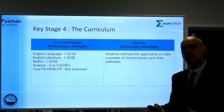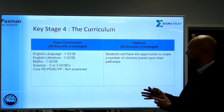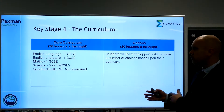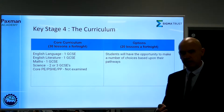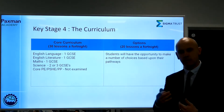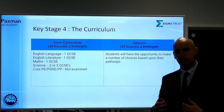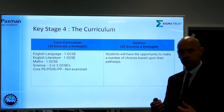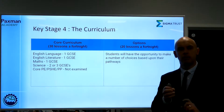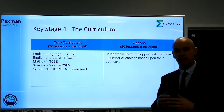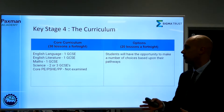So what is the Key Stage 4 curriculum? Essentially, we've got two parts. The first part is the core curriculum, which is made up of approximately 30 lessons a fortnight. The reason I say approximately is because we have some different pathways for students. We then have our options, which is made up of approximately 20 lessons a fortnight. It depends on which pathway the students go through as to how much choice they have.